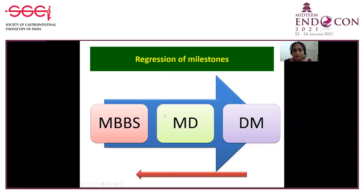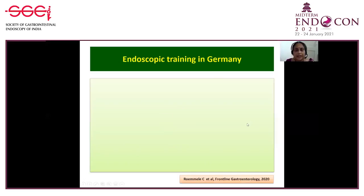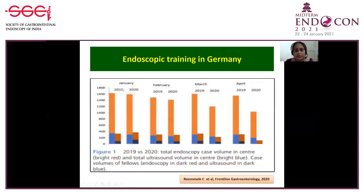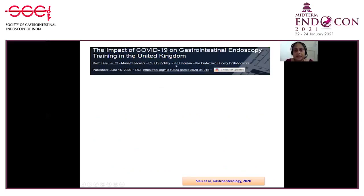There has also been regression of milestones. After MBBS and MD in internal medicine, trainees do DM in gastroenterology, but during the pandemic a large number of DM trainees were deployed in COVID hospitals to function like internists. Assessment in Germany at a tertiary care institution found that compared to 2019, there was significant reduction in cases taken up for endoscopy and in the number of trainees who got access to performing endoscopies during COVID.